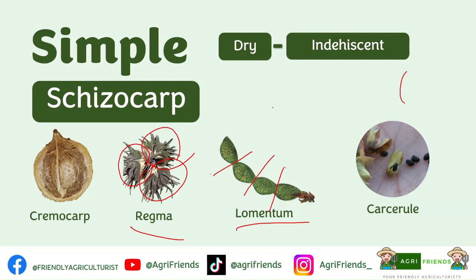For example, this is your carcerule. It is divided into four chambers — each chamber is called a pericarp, and each chamber has one seed.